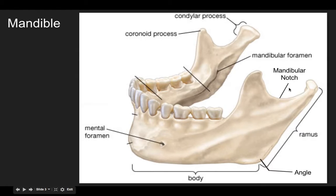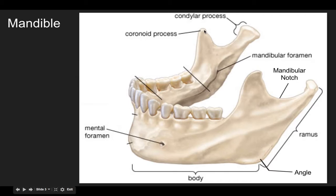We also have the mandibular notch, which is a depression between the condylar and coronoid process of the mandible. The coronoid process is a flattened triangular projection, which you can see right here — it does form a triangular shape.